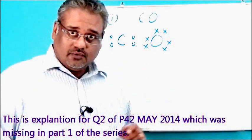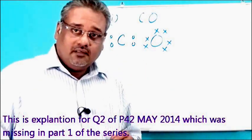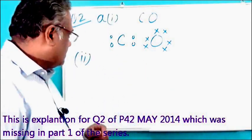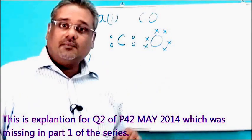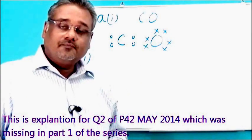In the next question, question 2A part 1, the question talks about the dot-cross diagrams for carbon monoxide.